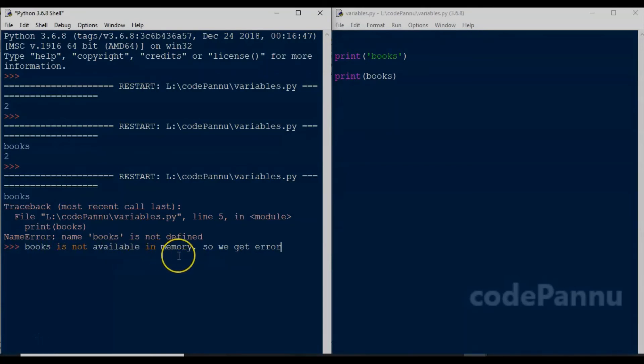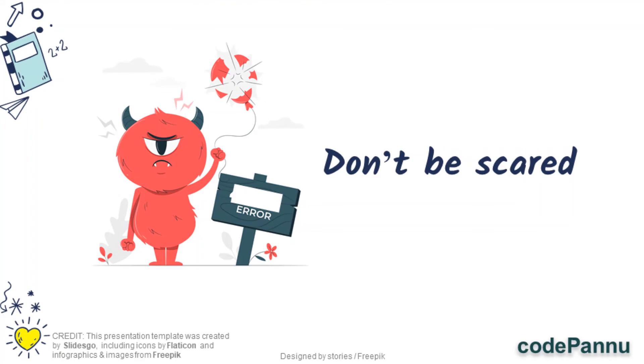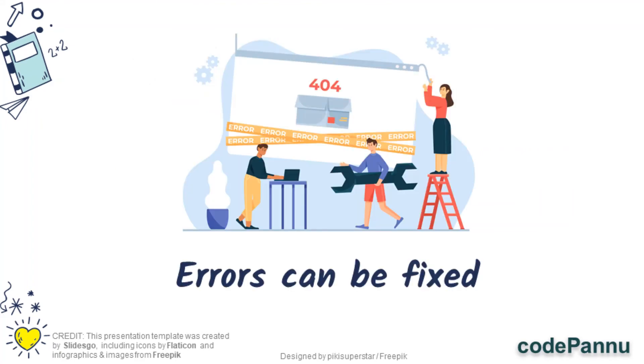Let me give you a small tip. Do not be scared of errors. All errors can be fixed. When there is an error, the programming language will give us the reason for the error, like how it said Python could not find the variable books, like books was undefined. So when we write more and more code, we will be able to understand the clues and fix those errors. It is easy peasy.